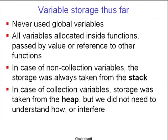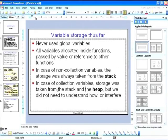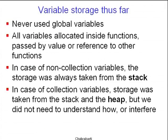So far the variable storage story has been like this: we have never used global variables. All variables we used were allocated inside functions and passed either by reference or by value to other functions. For non-collection variables like int, double, or char, storage was always taken from the stack. For collection variables like vector, list, or string, storage was taken partly from the stack but mainly from the heap.